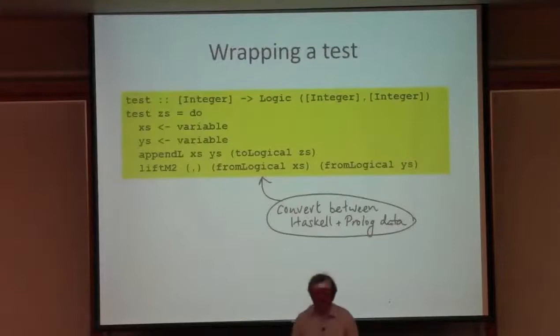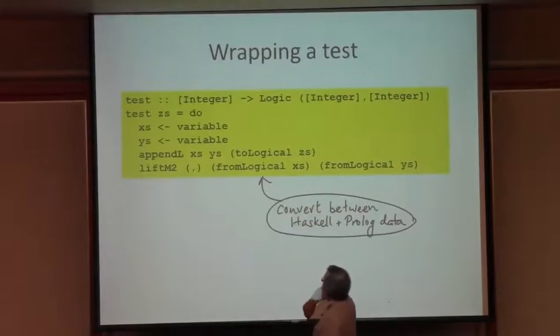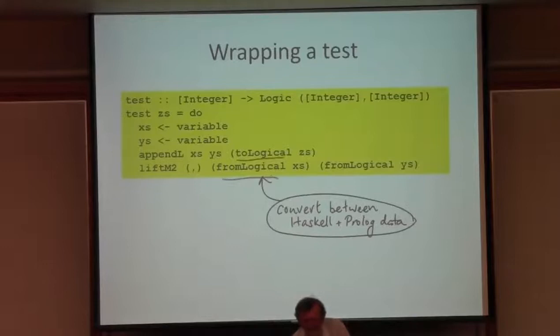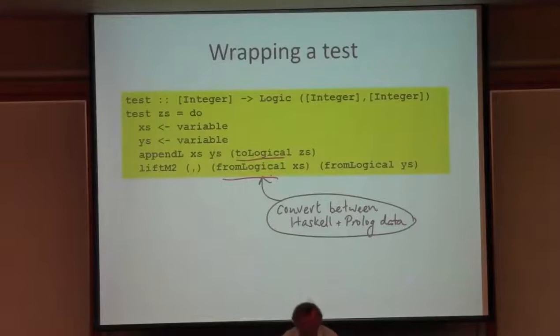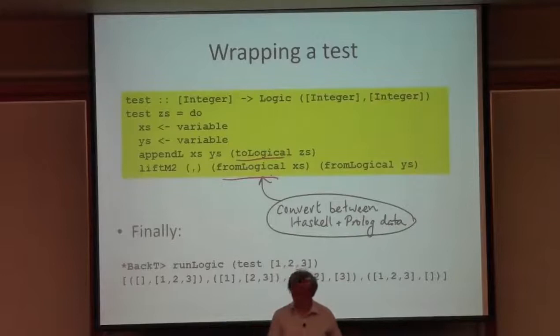Here's a test performing the cool application of append. We create two unknowns X's and Y's, ensure that appending them gives Z's, and return X's and Y's as the results. I've used some functions toLogical and fromLogical that convert between Haskell lists and Prolog lists to make it easier to see the result. Running the test as a logic program — bingo! Of course it works. There are the solutions. It's still nice to see that it works.